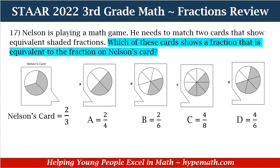Let's look at the answer choices. For A, there are 4 whole parts, and of those parts, 2 are shaded — so A equals 2/4. For B, we have 6 whole parts, and of those, 2 are shaded. For C, we have 8 whole parts, and of those, 4 are shaded. And for D, we have 6 whole parts, and of those 6 parts, 4 are shaded — so D equals 4/6.